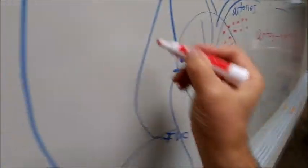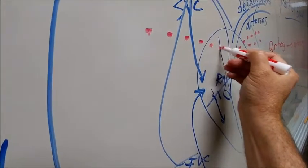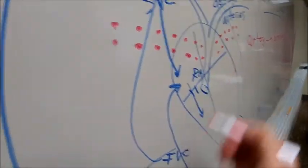That's oxygenated blood coming from the lungs back to the left atrium through what kind of veins? Everybody say pulmonary veins.